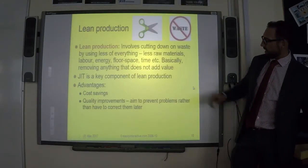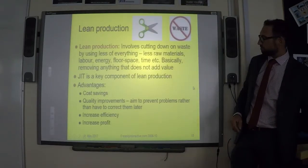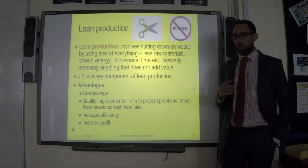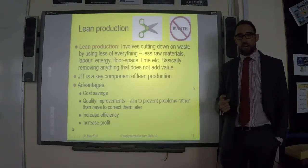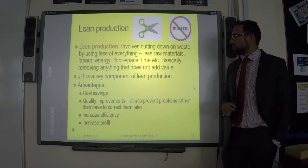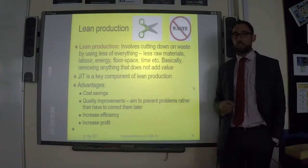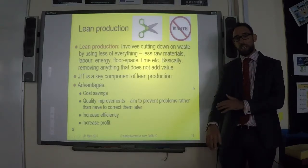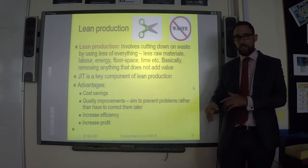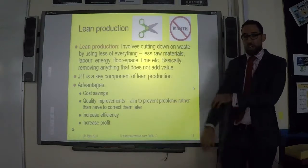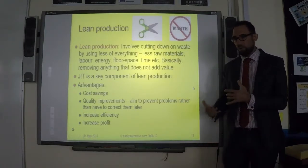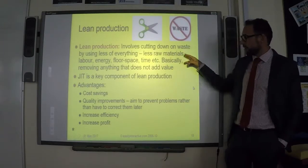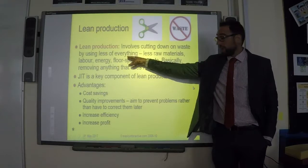Lean production is basically about cutting out waste — anything wasteful in a business, you get rid of it. It's a method to increase efficiency. Think of it like an athlete: they're lean, they don't have much fat. With lean production, by cutting away the fat — the wasteful elements — we become more efficient. It involves cutting down on waste, buying less or using less of everything: less raw materials, less labor if you don't need workers, less energy, less floor space, and less time.